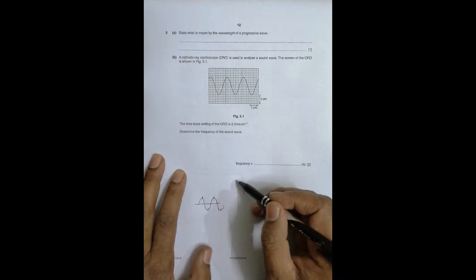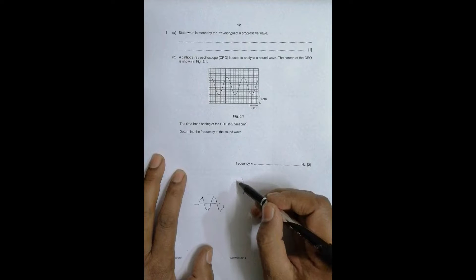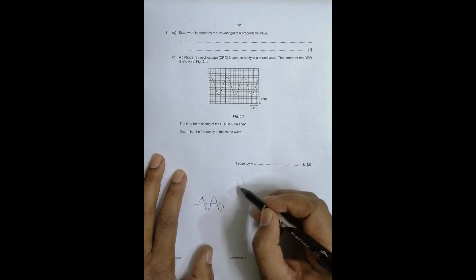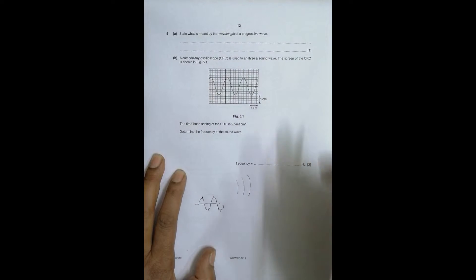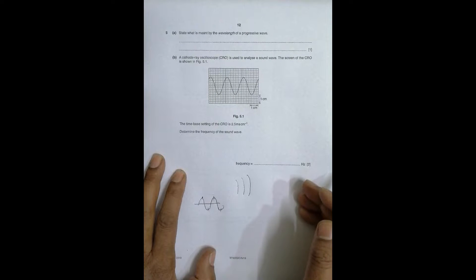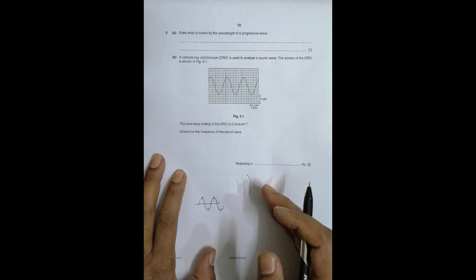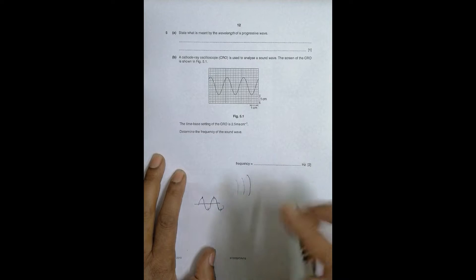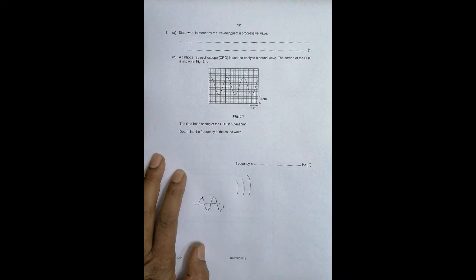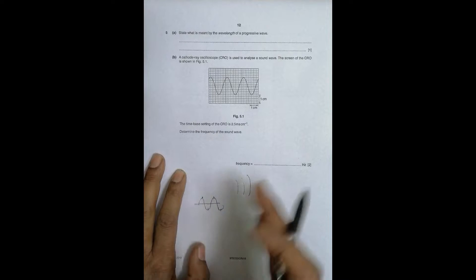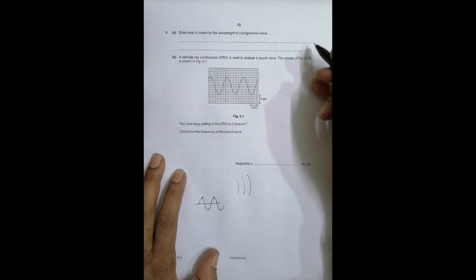Wave fronts are the locus of particles performing the same simultaneous movement. If I consider a crest point, all points on that wave front represent the crest — and the distance between adjacent crests represents the wavelength. Another definition: it is the distance traveled by a wave when the source vibrates once, or the distance traveled by the energy when the source oscillates once. There are many definitions — write only one for that one mark.